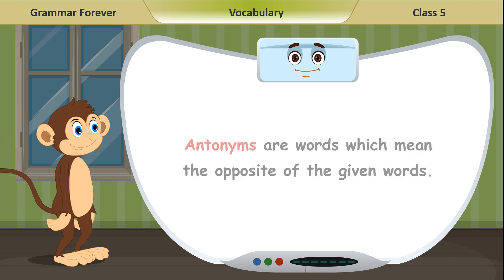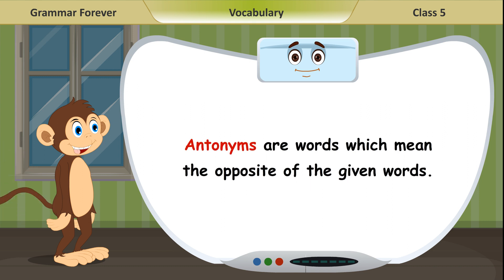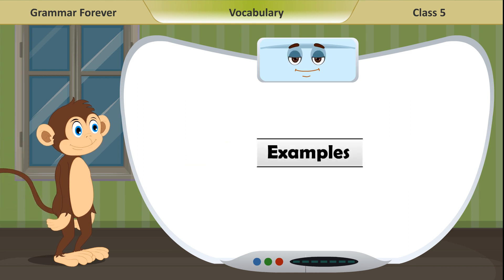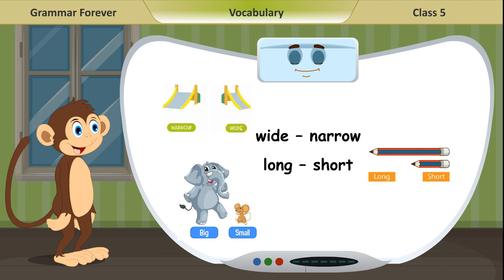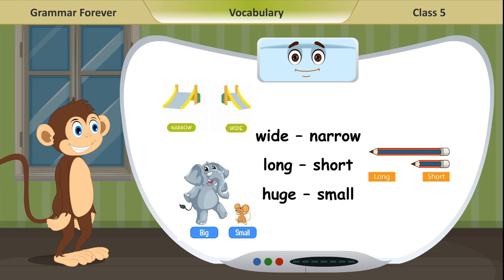Antonyms. Antonyms are words which mean the opposite of the given words. Examples: wide — narrow; long — short; huge — small.